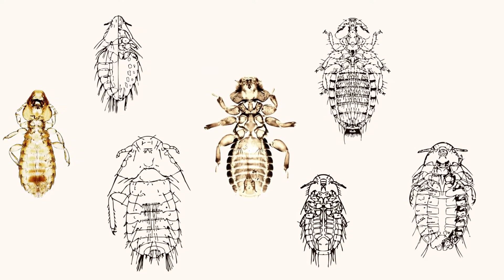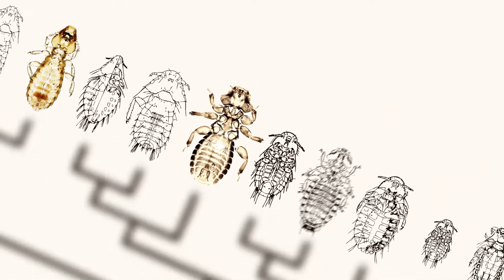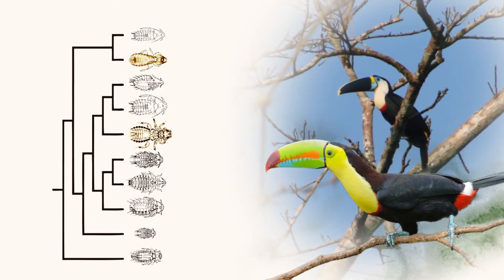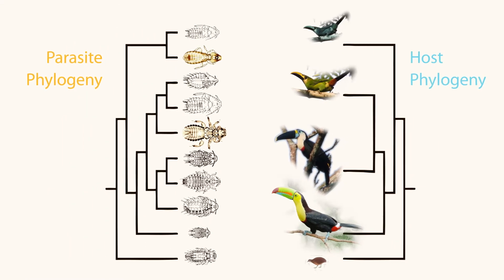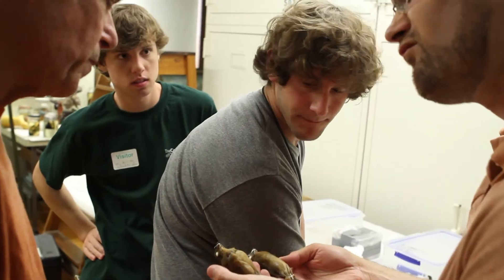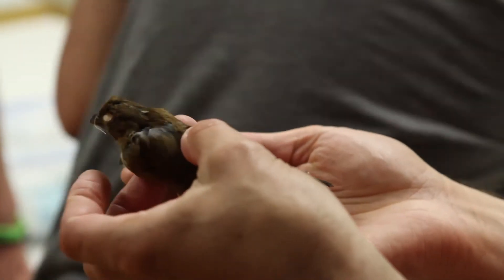I think there's been a shift from the main focus in co-evolutionary biology early on, which was co-speciation. What we can do is compare a host phylogeny and a parasite phylogeny and basically ask: is the parasite phylogeny a mirror image of the host phylogeny? It's much more difficult to get at the other kinds of things that affect co-evolutionary history.